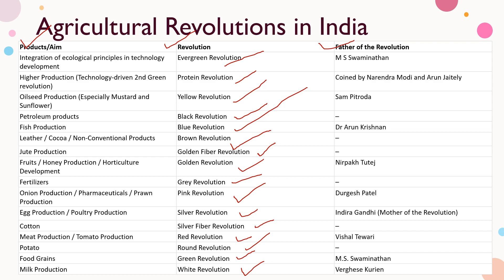Now we will see the father of each revolution. For White Revolution, the father is Verghese Kurien. For Green Revolution, the father is M.S. Swaminathan. For Red Revolution, the father is Vishal Tiwari. For Silver Revolution, Indira Gandhi is known as the mother. For Pink Revolution, Durgesh Patel is the father. For Golden Revolution, it is Nirpakh Tuteja. For Blue Revolution, the father is Dr. Arun Krishnan. For Yellow Revolution, the father is Syam Pitroda. The term Protein Revolution was coined by Narendra Modi and Arun Jaitley. M.S. Swaminathan is also the father of the Evergreen Revolution.